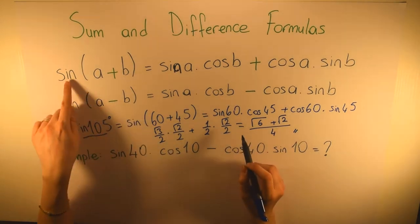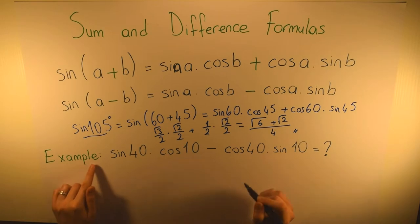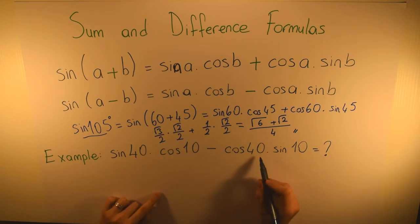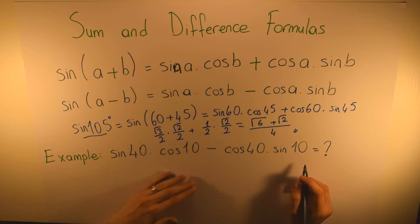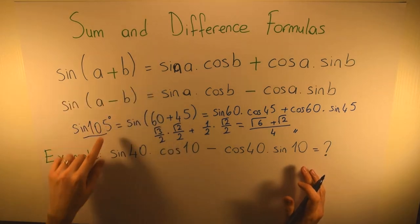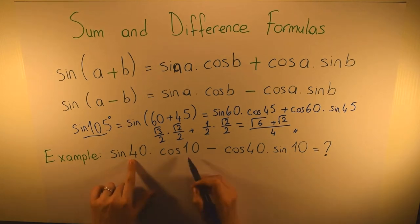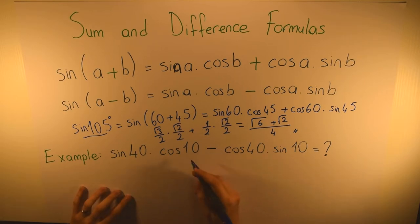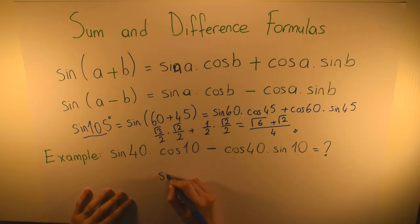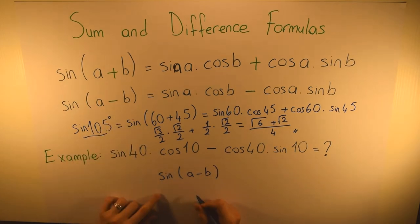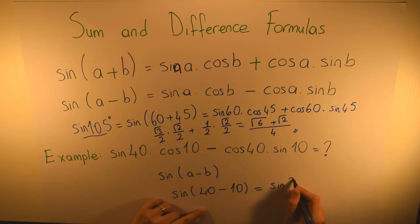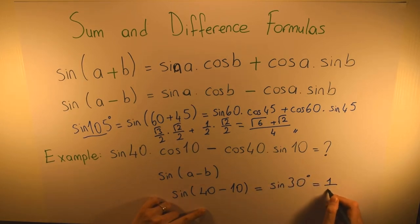Now let's look at this example: sine 40° · cosine 10° − cosine 40° · sine 10°. The question is given as an expanded version of the formula — one sine, one cosine, one cosine, one sine, with a minus sign. This means it is the expanded form of sine(a−b), which equals sine(40−10) = sine 30° = 1/2.